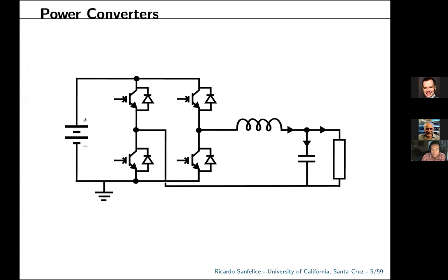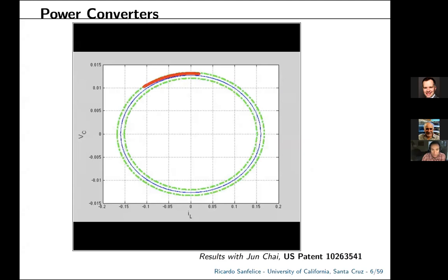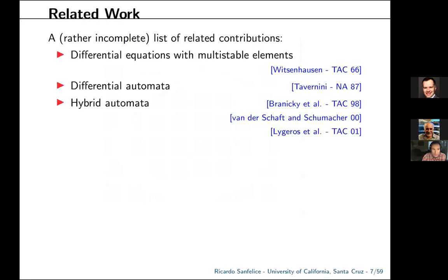Circuits are also systems involving non-smoothness. The model of an inverter — to convert DC voltage to AC voltage — is typically a switched system. The control algorithm for inversion makes decisions on switching boundaries with hysteresis to guarantee that a particular pseudo-sinusoidal trajectory is generated. Under the hood there is a logic variable that keeps track of where in the state space, corresponding to these surfaces, the state of the system might be.